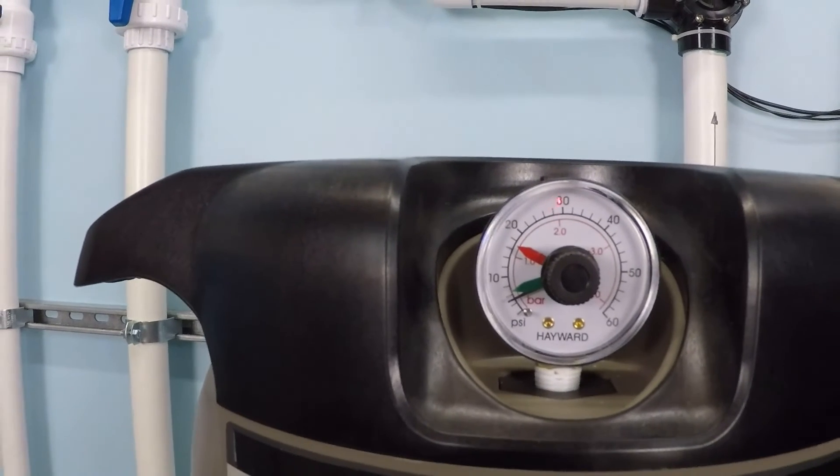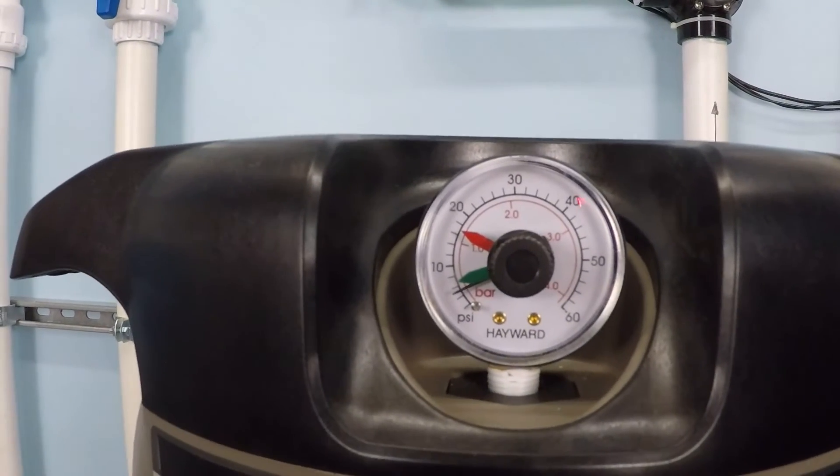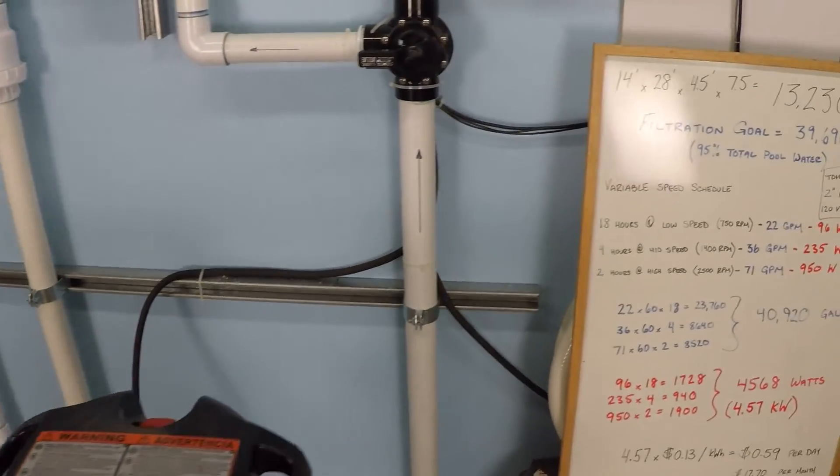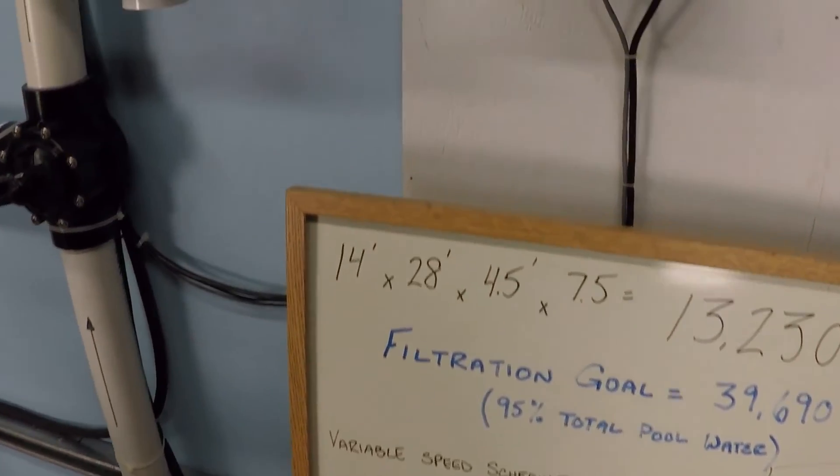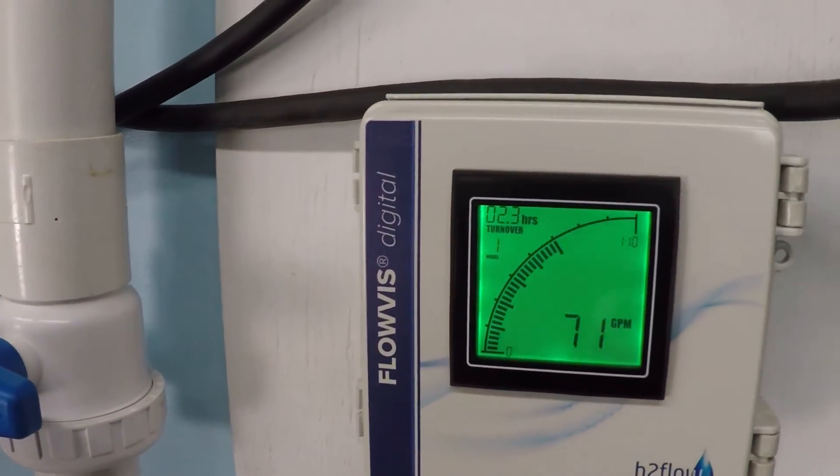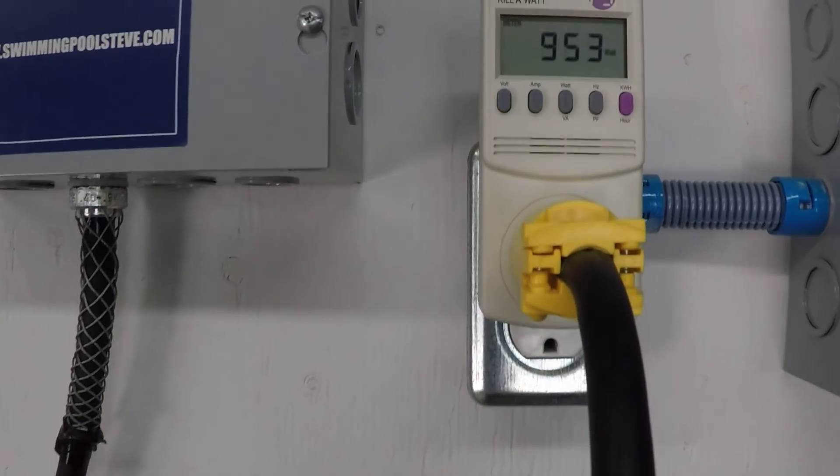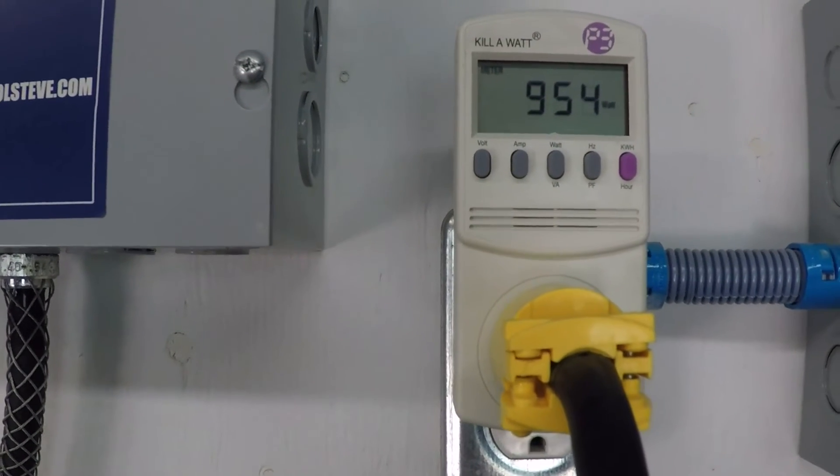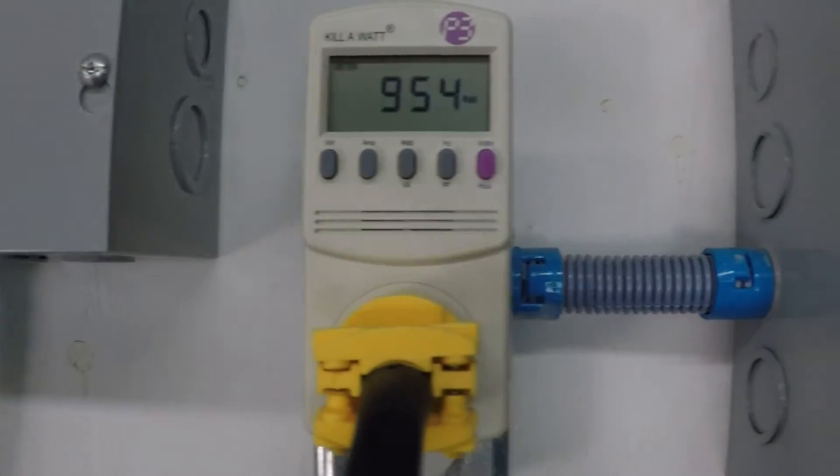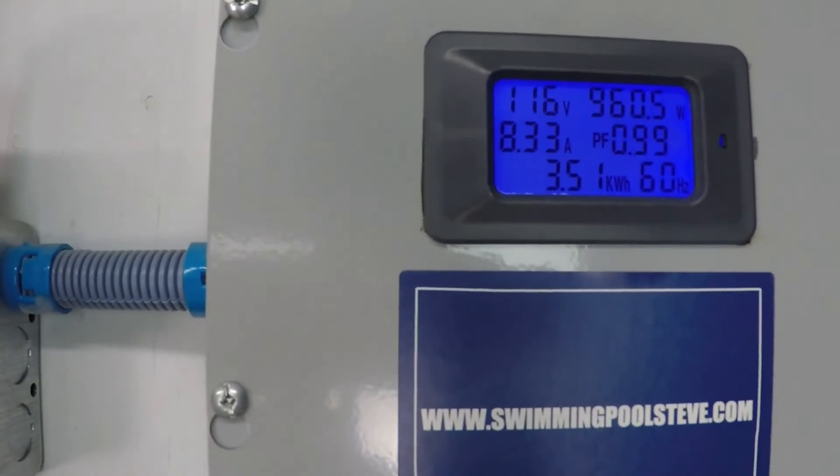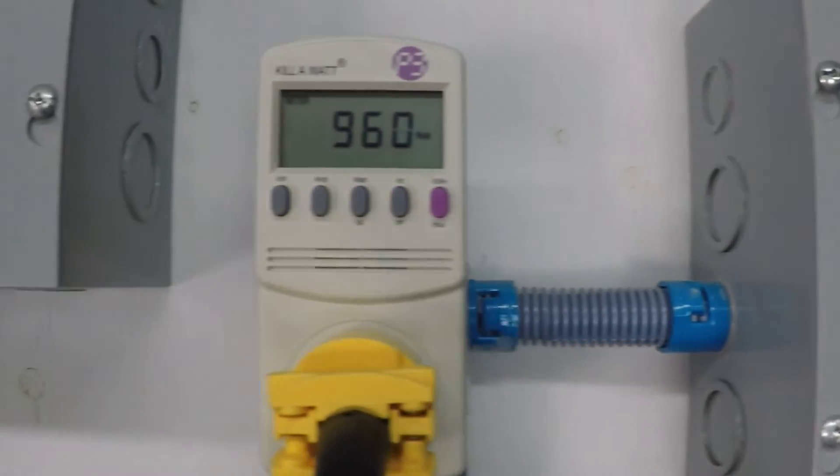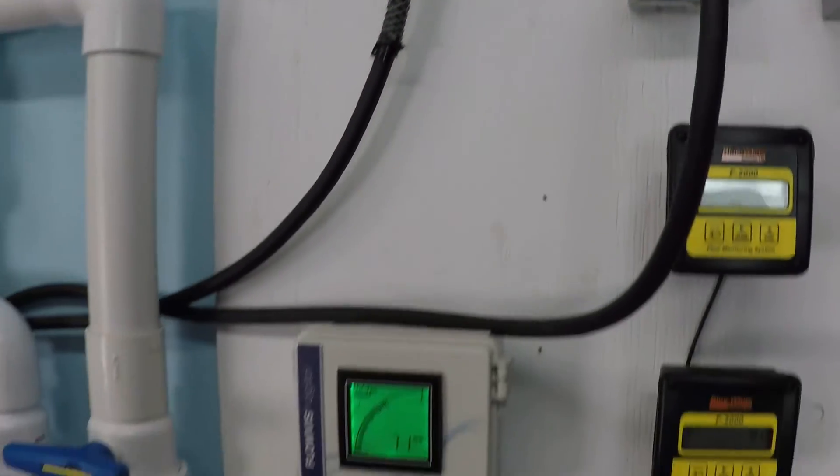We were barely 3 PSI on the gauge here. 71 gallons per minute. Under 1000 watts. Over 950 by a little bit. 960 here. But there is some variance in that 950 as you saw.